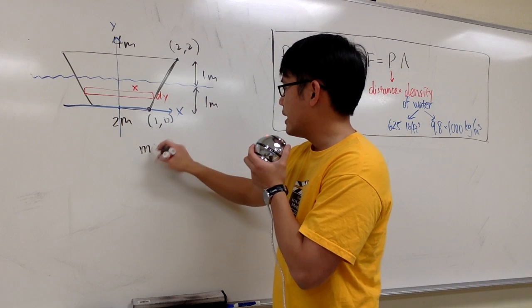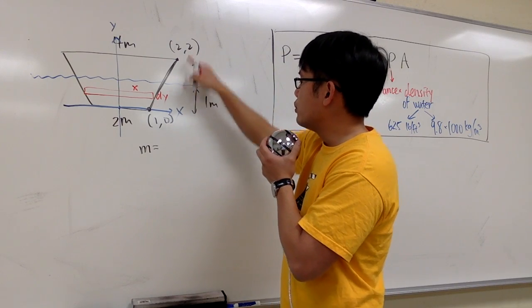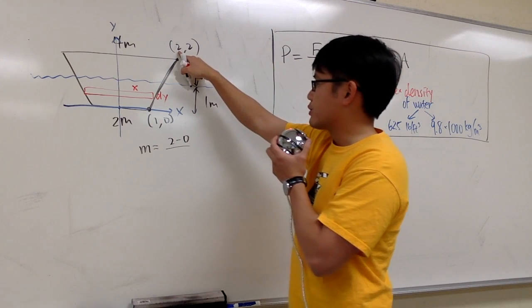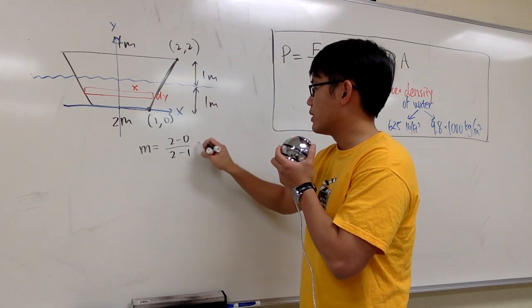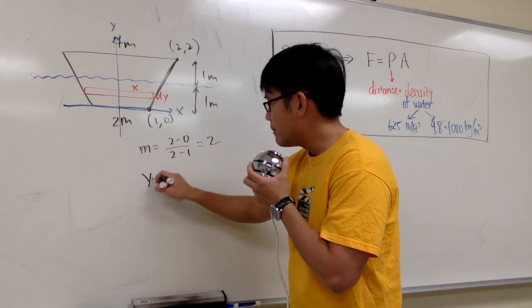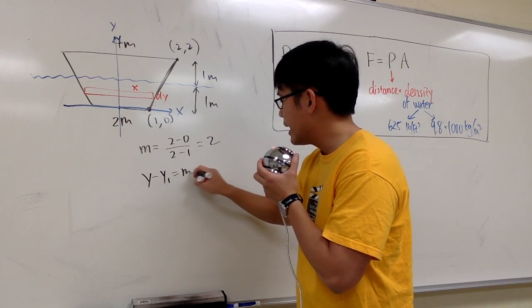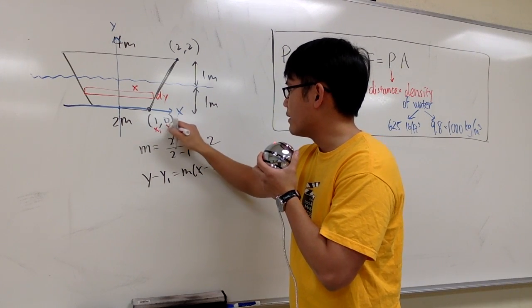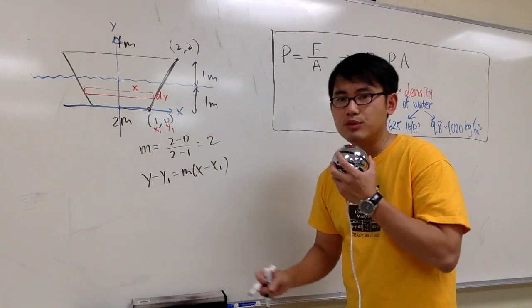So I need a slope, let's say m for the slope. So I do y2 minus y1, which is 2 minus 0, over x2 minus x1, so 2 minus 1, so 2 minus 1. In another word, 2 over 1, which is just 2. And I will use y minus y1 equals to m times x minus x1. I would like to call this x1 and y1, especially as 0.